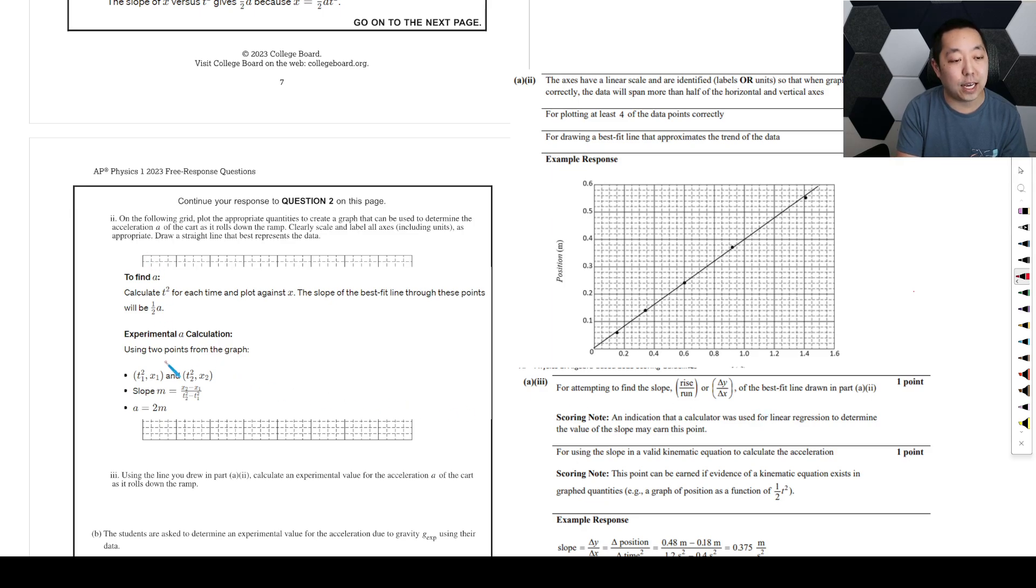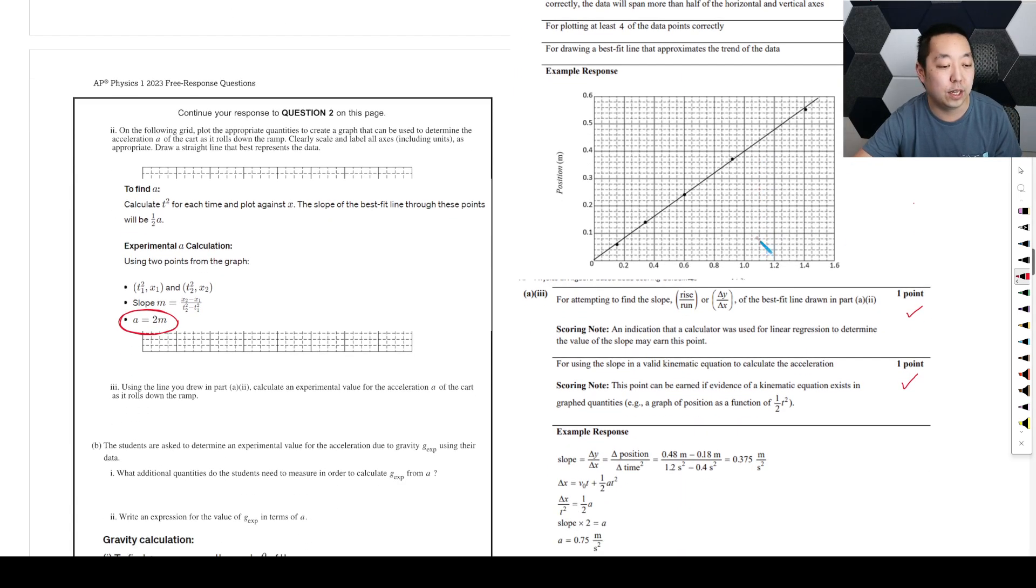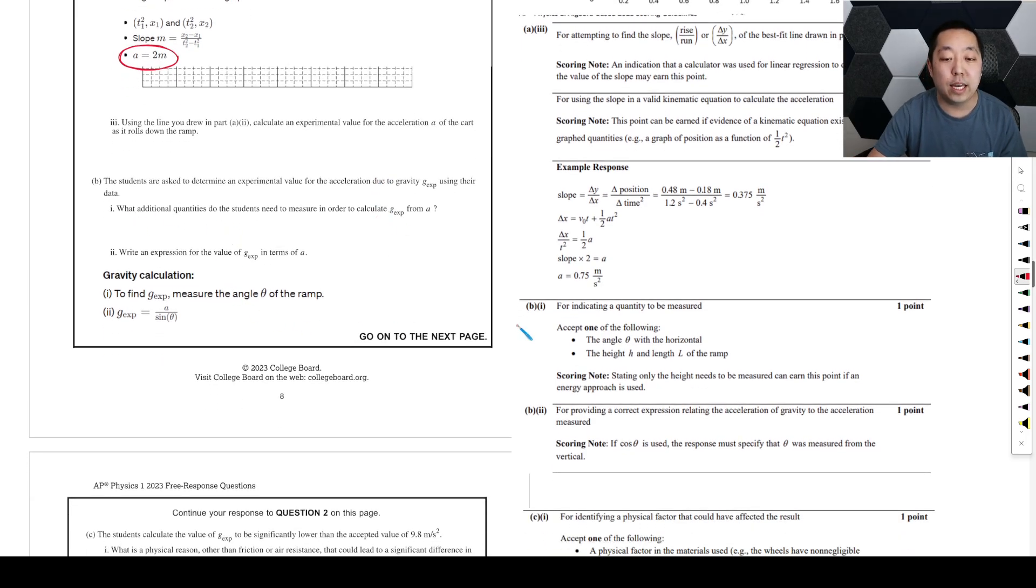Here, it is attempting to find the slope, it does say to use the slope calculation here. So I would say it attempted it. And using the slope of a valid kinetic equation, it knew that the acceleration would be twice the slope. So I would grant it that given that it couldn't actually plot the data on the graph. You probably wouldn't if you were to answer it this way, you probably wouldn't get this credit. But I know the limitation of the chat GPT has, but it did know what you ought to have done if it could understand the points on the graph and doing that straight line there.